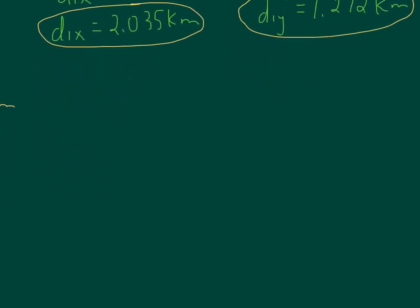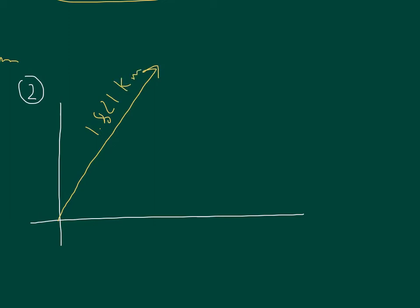Now I'm going to re-sketch the second vector. The second vector looks something like this. And again, the scale is not super important. So this is 1.821 kilometers. And the angle you were given was outside of the triangle. It's 21.3 degrees. So that's not really that useful because when I go to draw my right-angle triangle, I'll call this D2x because it's the x component of the second vector, and this is D2y. I need the angle inside the triangle in order to do the trig. So I'll just take my 21.3, I'll subtract it from 90, and I will get 68.7 degrees inside the triangle. So now we can solve.